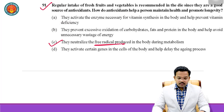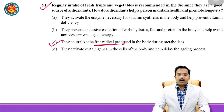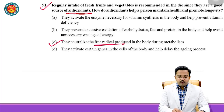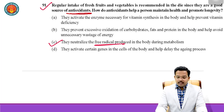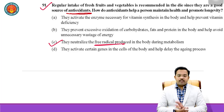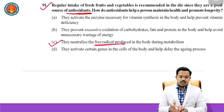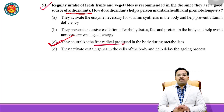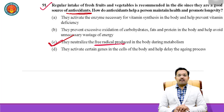Question number 91: A regular intake of fresh fruits and vegetables is recommended in the diet since they are a good source of antioxidants. How do antioxidants help a person maintain health and promote longevity? The straightforward correct answer is: they neutralize the free radicals produced in the body during metabolism. This kind of question requires common sense — antioxidants are heavily advertised, so it's worth searching what is commonly said about them.